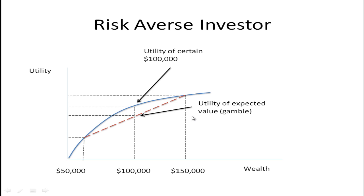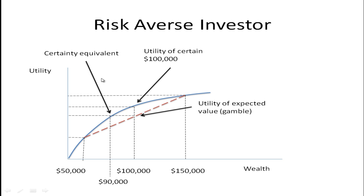We can actually quantify this. Drawing across from the expected value of the gamble horizontally until we hit the utility function — let's say it's $90,000 — this is called the certainty equivalent. This person gets the same utility from $90,000 with certainty as they do from the gamble with an expected value of $100,000. So this person might be willing to pay $10,000 to assure themselves of getting $90,000; they're not willing to take the risk.